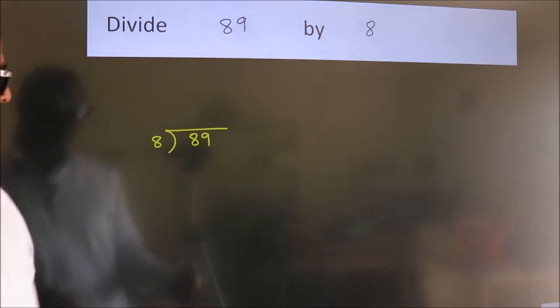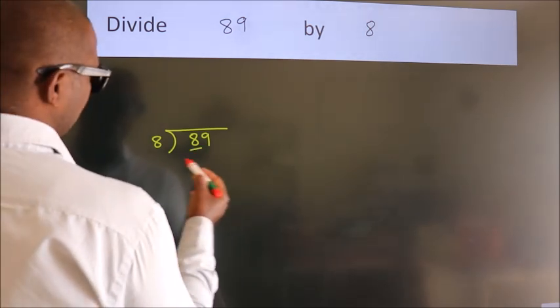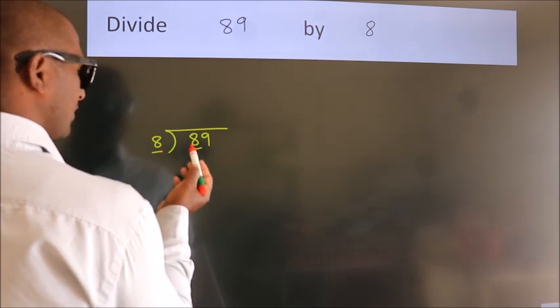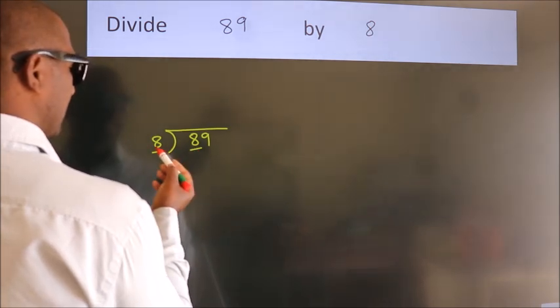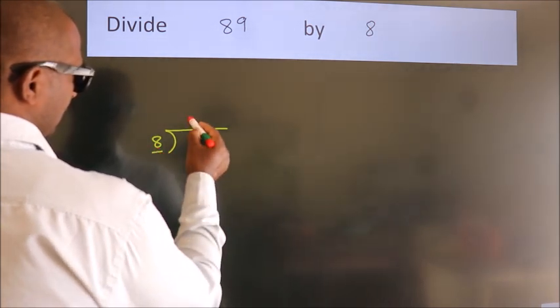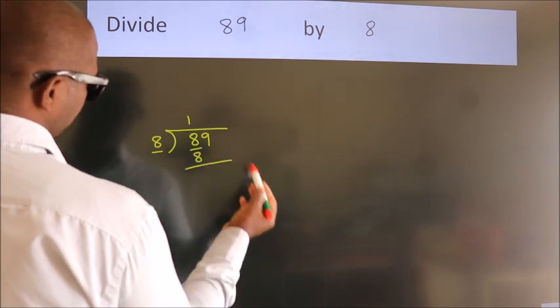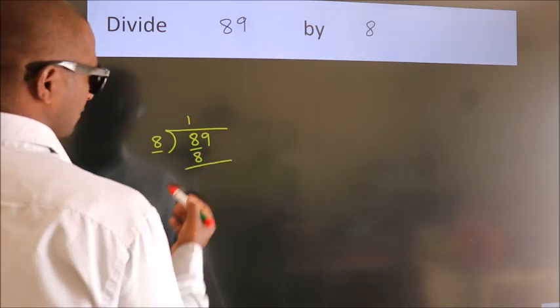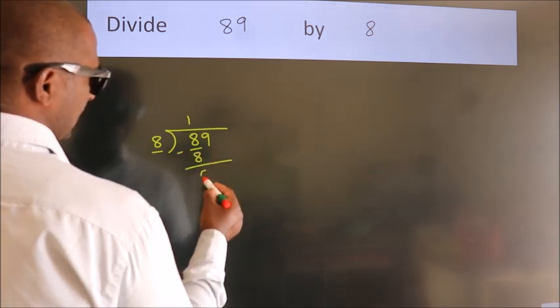Next. Here we have 8, here 8. When do we get 8 in 8 table? 8 once, 8. Now we should subtract. We get 0.